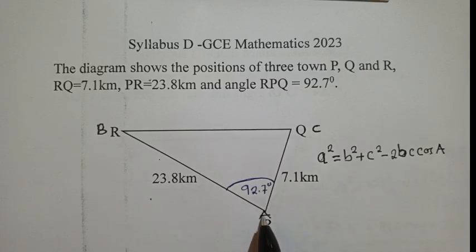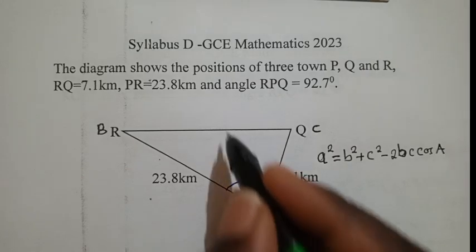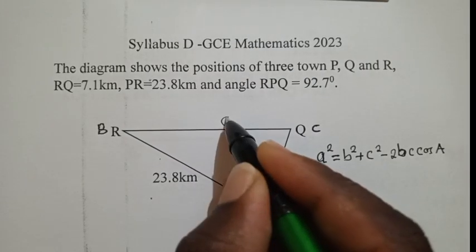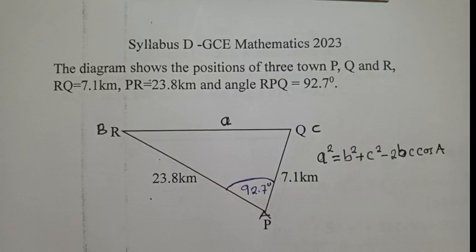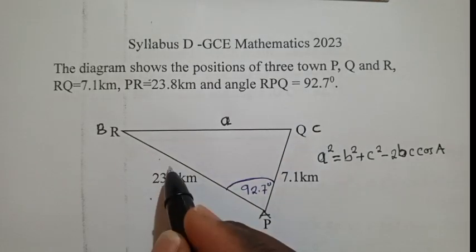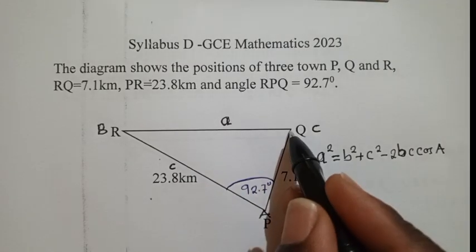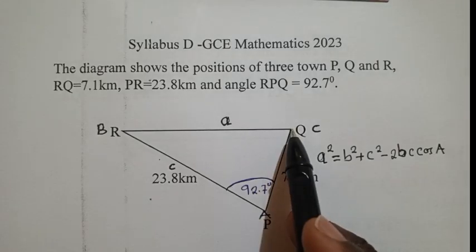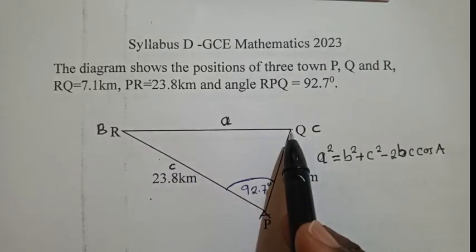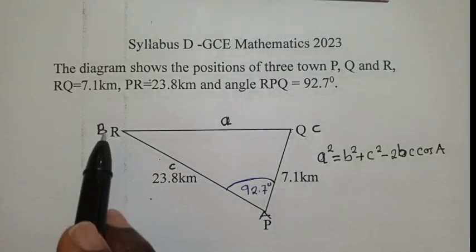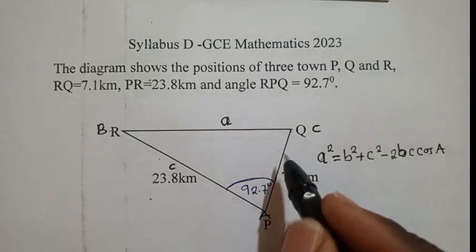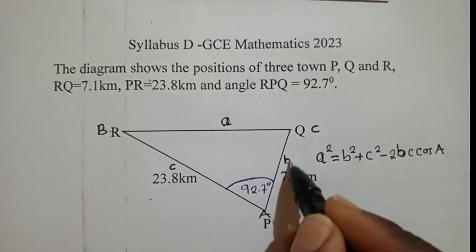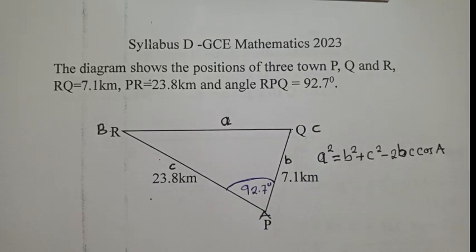So if I put my capital letter A here, my small letter a will be the opposite side. My small letter C will be the opposite side. So this is an angle. Remember, capital letters represent angles. So this is my angle. The side which is opposite to this angle is my C. While B, capital letter B, the side is right here, small letter b.